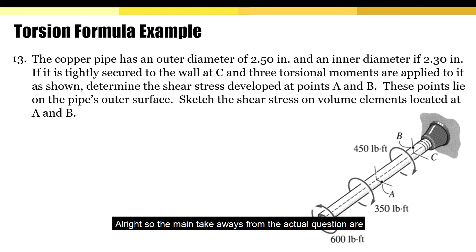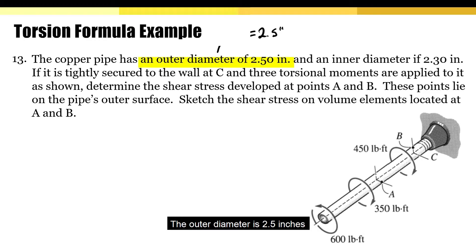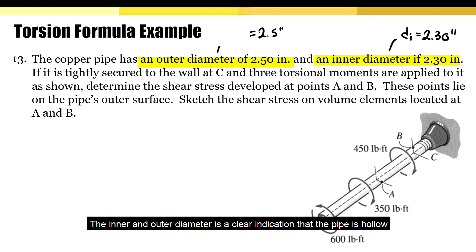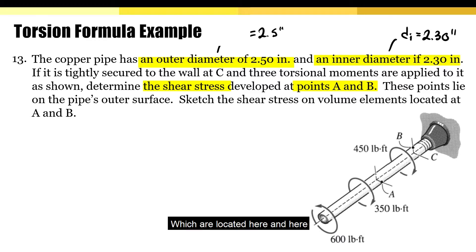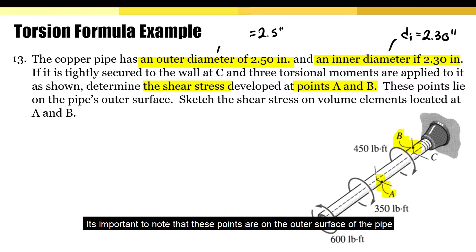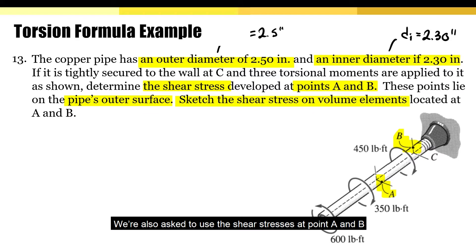The main takeaways from the question are: the outer diameter is 2.5 inches and the inner diameter is 2.3 inches. The inner and outer diameter is a clear indication that the pipe is hollow. The question is asking us to solve for the shear stresses at points A and B, which are located here and here. It's important to note that these points are on the outer surface of the pipe, and we're also asked to use the shear stresses at points A and B to sketch the corresponding volume element.